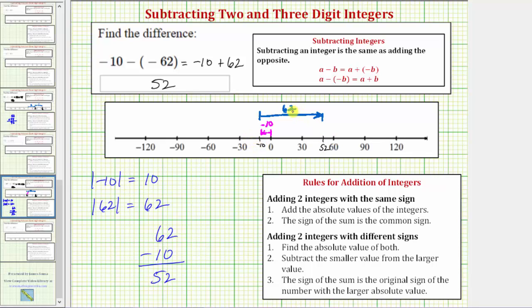-10 plus 62 equals +52, and so does -10 minus -62. I hope you found this helpful.